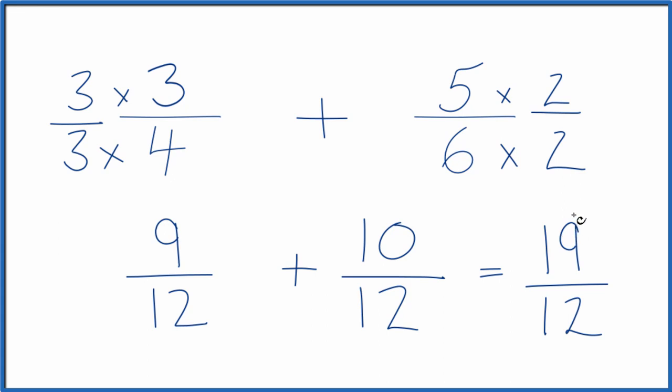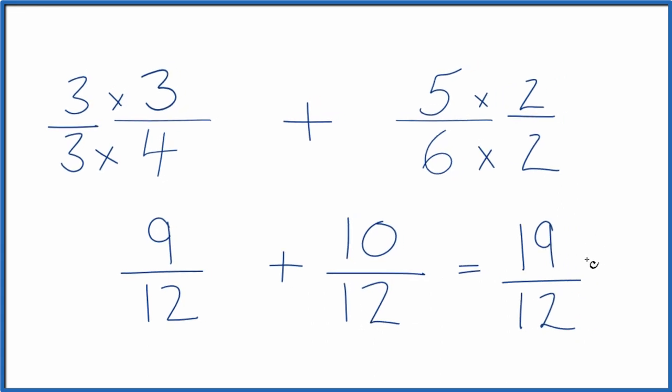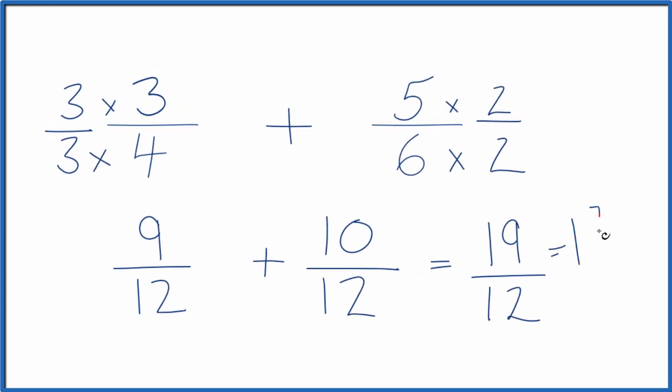This is an improper fraction. 19 is larger than 12, so we could write it as a mixed number. 12 goes into 19 one time with 7 left over. Bring the 12 across. And we could also call this 1 and 7/12. That's the same thing as 19 over 12.